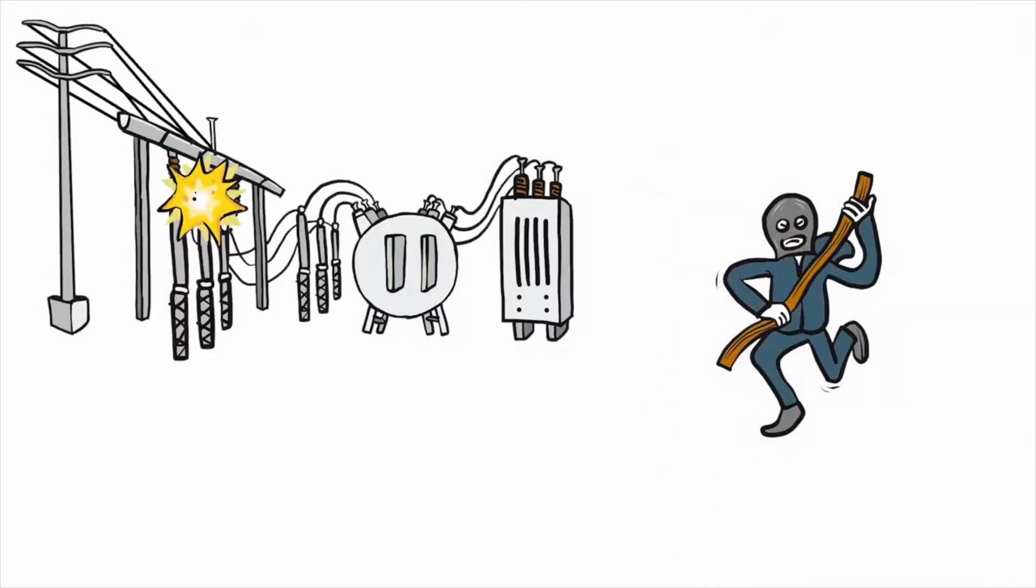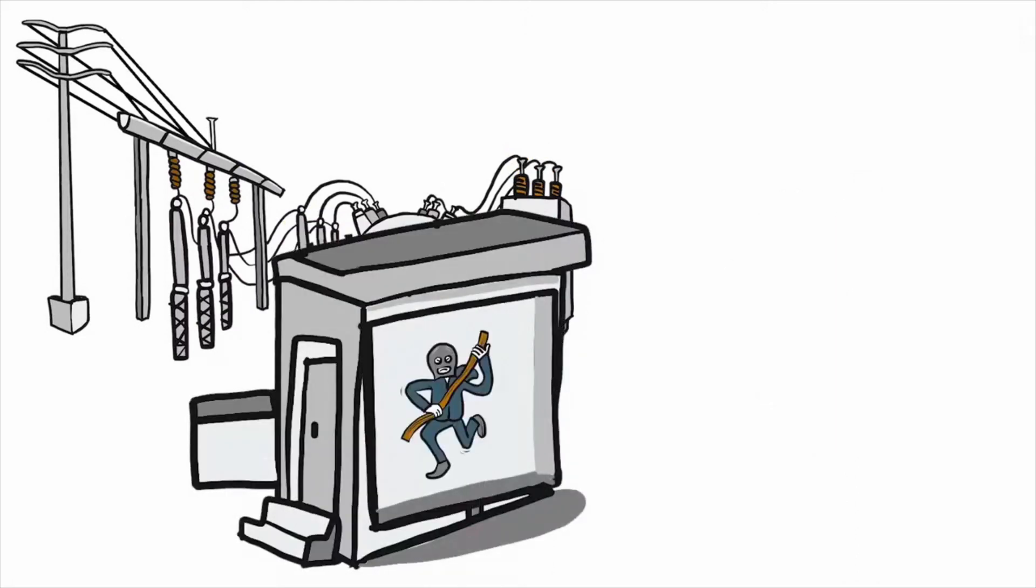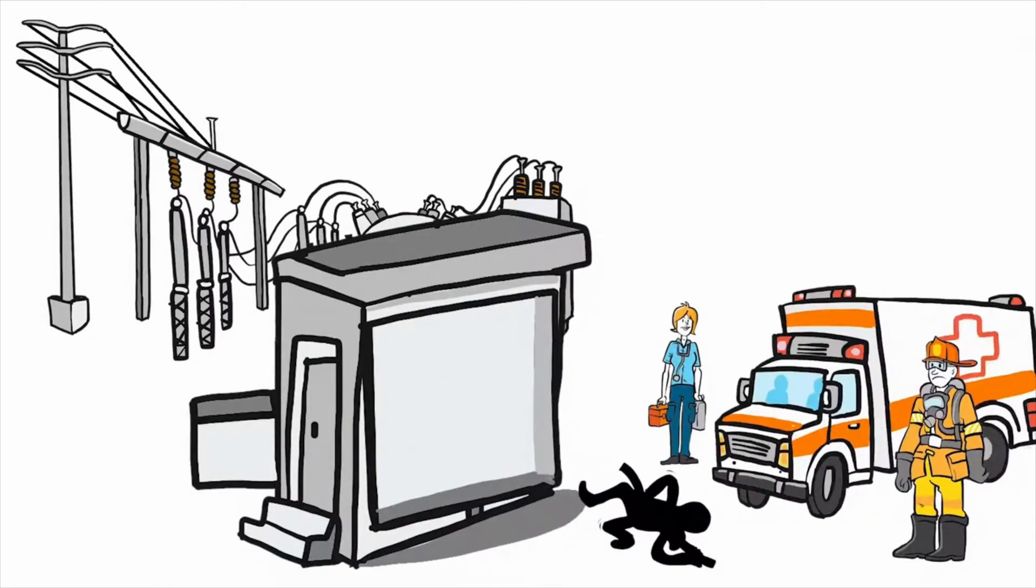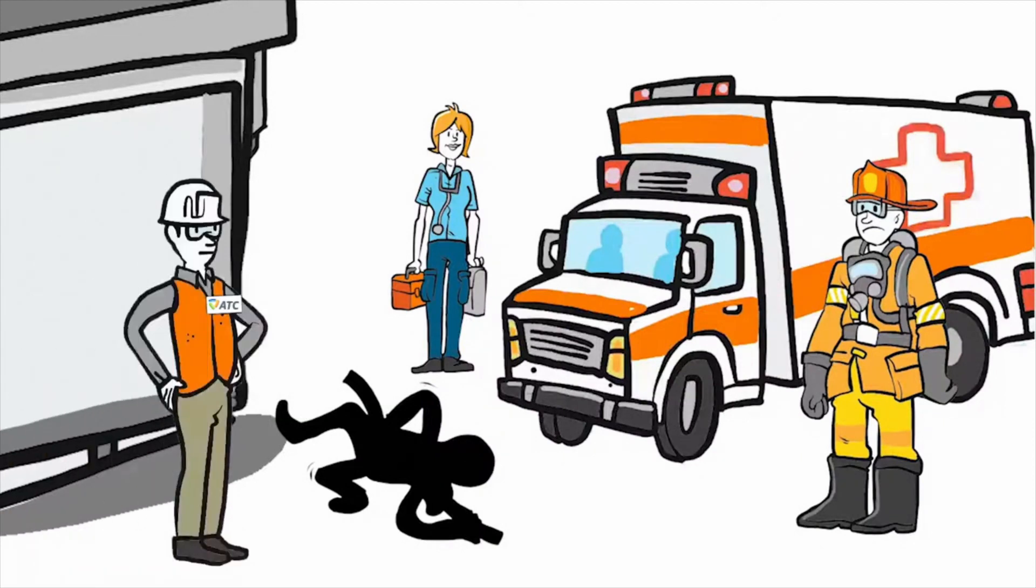Copper theft can cause substation fires by causing equipment to malfunction and potentially harming the thief. If the person attempting the theft is electrocuted, the body can be electrically energized. Emergency responders should consider their own safety. Do not attempt to recover the body or come in contact with any equipment until ATC personnel declare the site safe to enter.